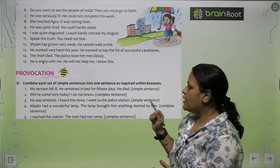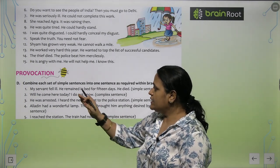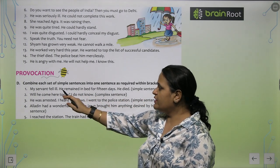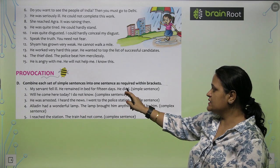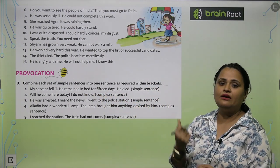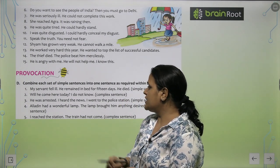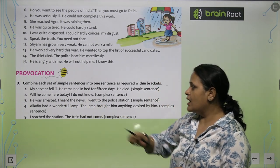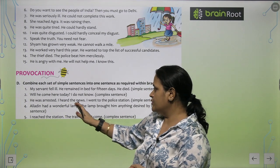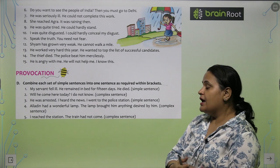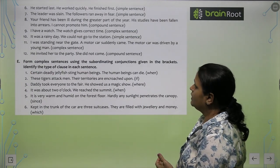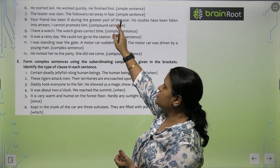Like this you can complete all the points. Now next exercise — Exercise J. Combine each set of simple sentences into one sentence as required. 'My servant fell ill. He remained in bed for 15 days. He died.' Combined (complex): 'Due to illness, after remaining in bed for 15 days, my servant died.' 'Will he come here today? I do not know.' Combined: 'I do not know whether he would come here today.' 'He was arrested. I heard the news. I went to the police station.' Combined: 'Hearing the news of his arrest, I went to the police station.' 'He started last. He worked quickly. He finished first.' Combined (simple): 'After starting last but working quickly, he finished first.'